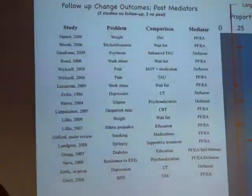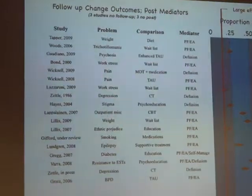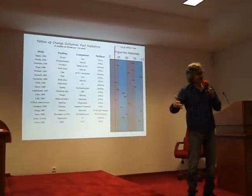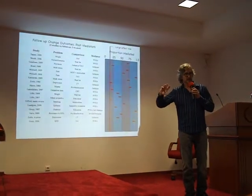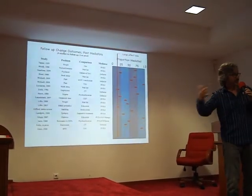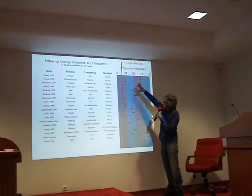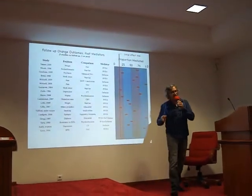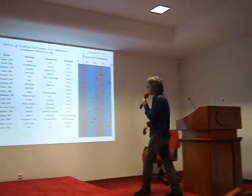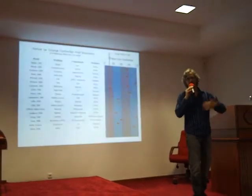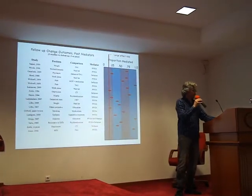Looking at the mediational studies — there are a number published and more in the pipeline. This graph shows the proportion of treatment outcome mediated by the theoretical processes within the model: does acceptance, psychological flexibility, defusion predict good treatment outcomes? What you see is an extraordinary level of consistency. The red line here represents a large effect size, and you see extraordinarily large amounts of variance in outcome accounted for by the properties suggested in the model.